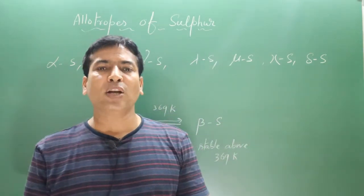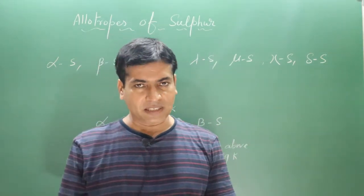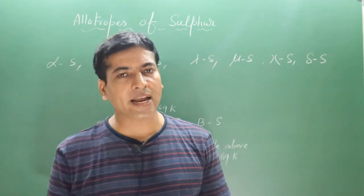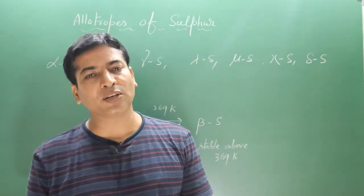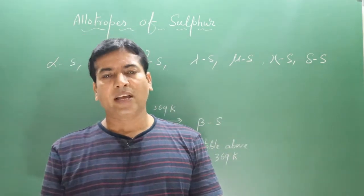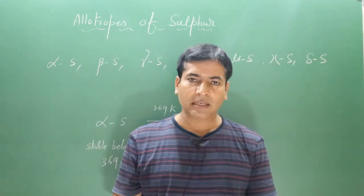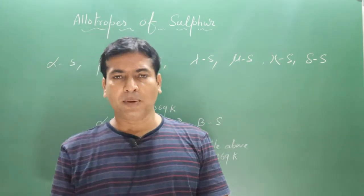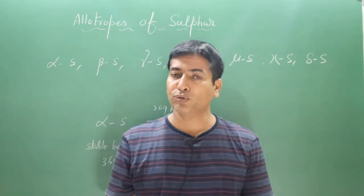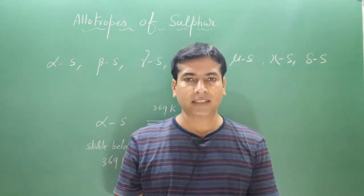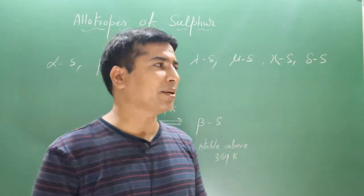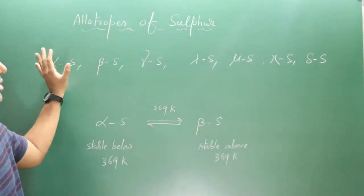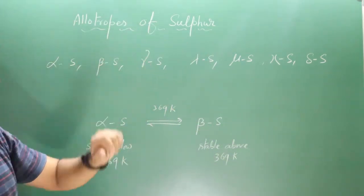Now we will discuss about allotropes of sulfur. Sulfur has more number of allotropes than any other element in the group. The examples of allotropes of sulfur are alpha sulfur, beta sulfur, gamma sulfur, lambda sulfur, mu sulfur, and delta sulfur. I have written this information on the board.